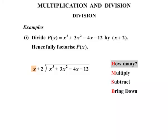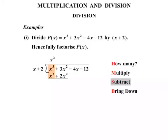How many? We concentrate on the leading term, which is x in x plus 2, and the leading term x cubed. Ask yourself: how many times does x go into x cubed? In other words, x times what gives x cubed? It will be x times x squared. Then we multiply x squared not just by x, but by the whole thing, x plus 2. We get x cubed plus 2x squared. Then we subtract — x cubed minus x cubed is nothing. Then 3x squared minus 2x squared gives a single x squared. Bring down: minus 4x comes down.